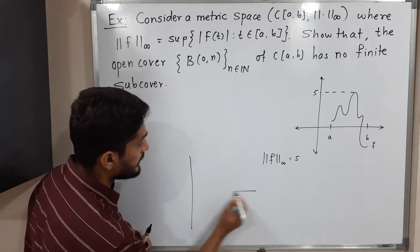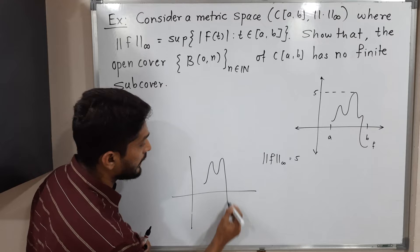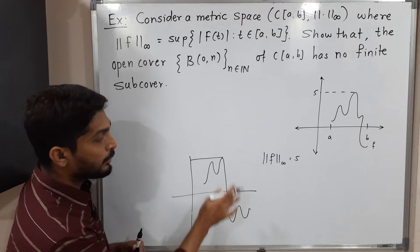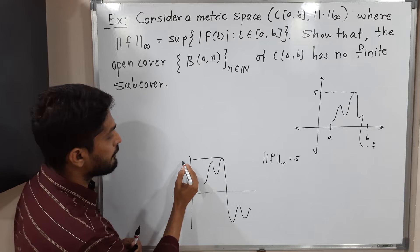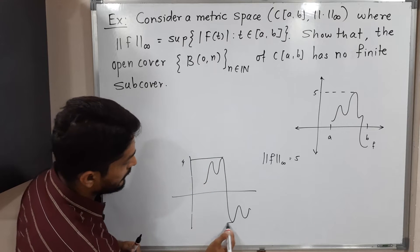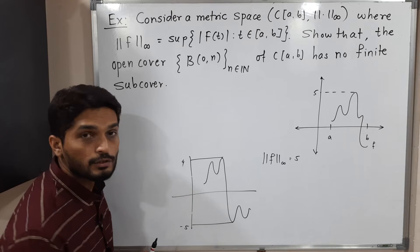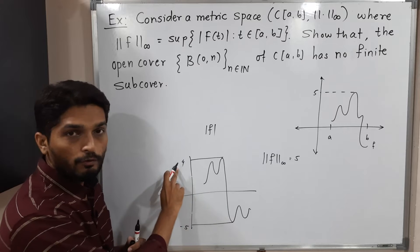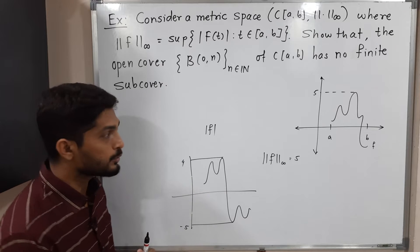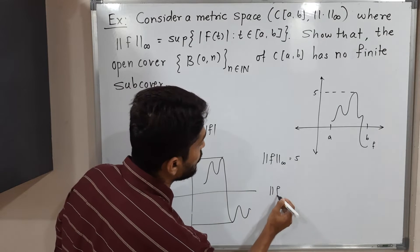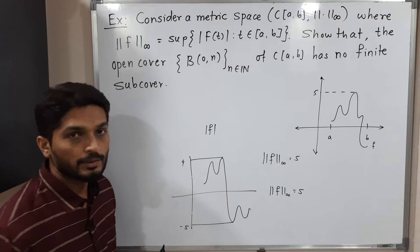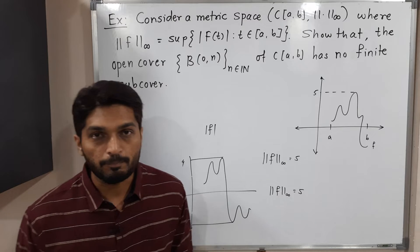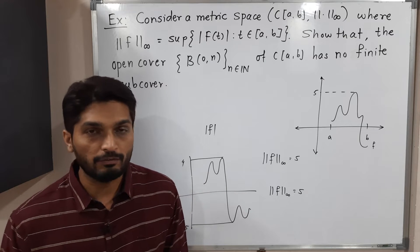Let us discuss another example. Suppose we have a function whose maximum value above the x-axis is 4 and its minimum value is minus 5. We take the mod: mod of 4 is 4, mod of minus 5 is 5. So the norm F infinity is 5. That is the supremum of |F(t)|.